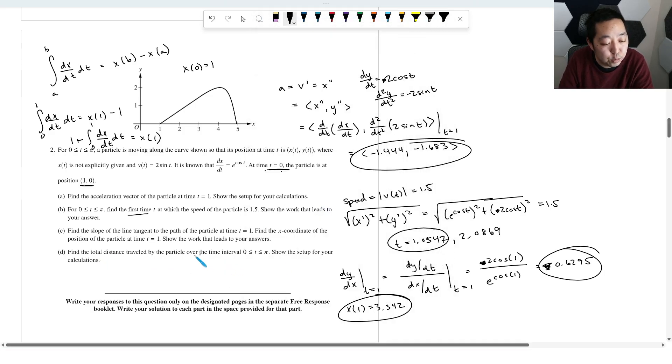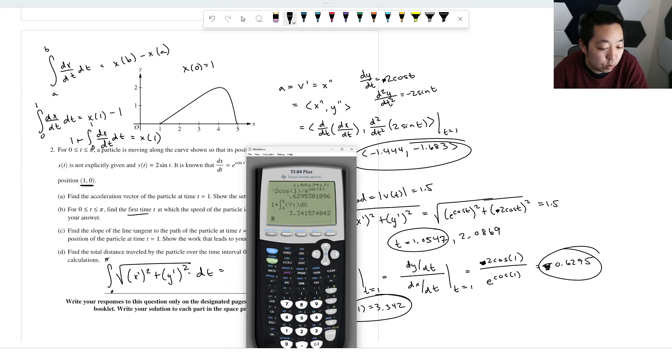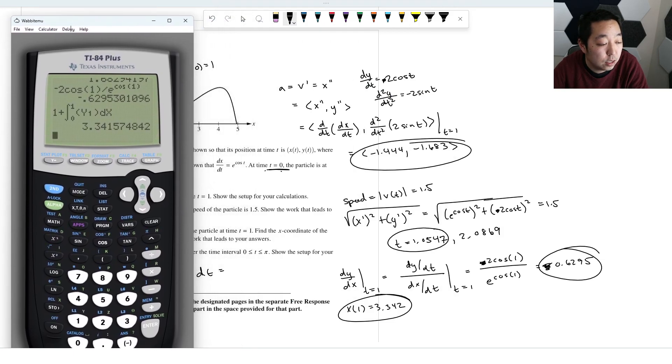Find the total distance traveled by the particle over the time interval from zero to π. Show the setup. So we're just going to integrate from zero to π of the speed vector. We just calculated the speed vector right here: e to the cosine of t squared plus two. I mean, you should actually, to get the full points, you should probably write it as the square root of x prime squared plus y prime squared dt. And you know, you're just using this thing here. So then we're just going to do, and we already put that into the calculator.